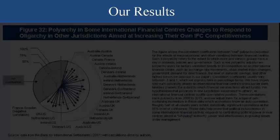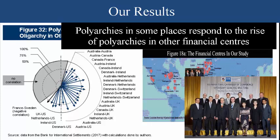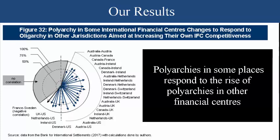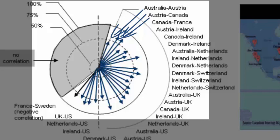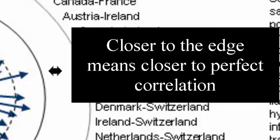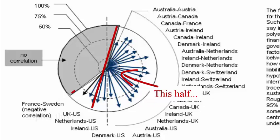What does our study show? Figure 32 shows the way that polyarchy, in some of the jurisdictions we looked at, changes in response to other jurisdictions' polyarchy. Namely, we see that the correlations between Australia and Austria, Austria-Canada, Canada-UK, Austria-U.S., and so forth — we see very large correlations between all these jurisdictions' polyarchies.